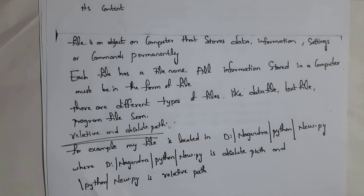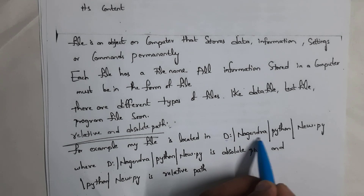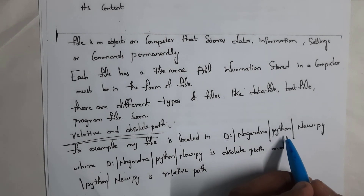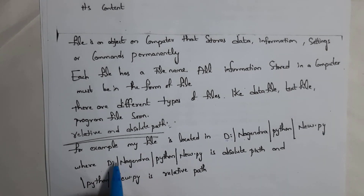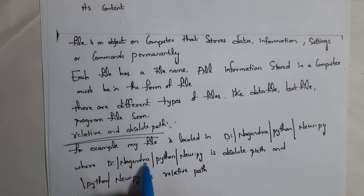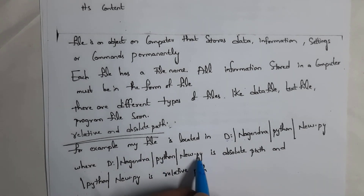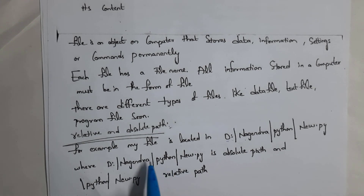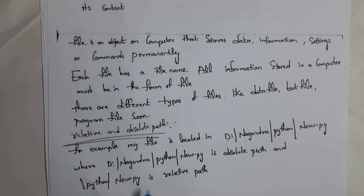Next, I will explain what is relative path and absolute path. For example, my file is present in local disk D, and in local disk D inside the Nagendra folder there is a Python folder, and inside the Python folder there is my file. That file name is new.py, so the path is D:/nagendra/python/new.py. This entire location is known as the absolute path. And if I write just python/new.py, we call it a relative path.